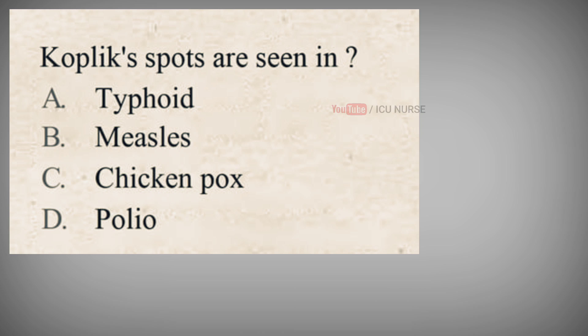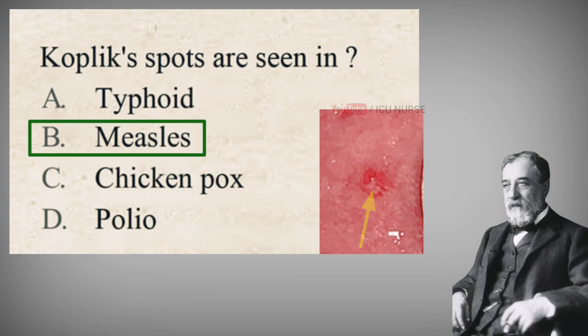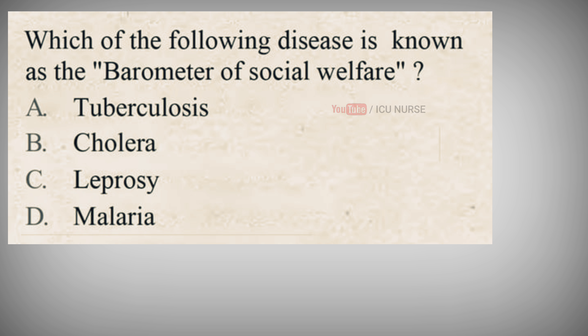Koplik spots are seen in which disease? A. Typhoid, B. Measles, C. Chickenpox, D. Polio. The correct answer is B. Measles. Koplik spots are small white spots with red rings that appear in the mouth as a symptom of measles. The term Koplik spot derives its name from Dr. Henry Koplik of New York, who first described them in 1896. Measles is also known as rubeola.